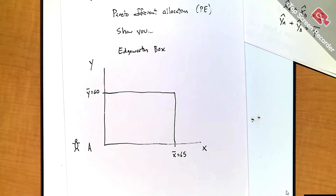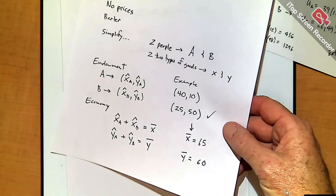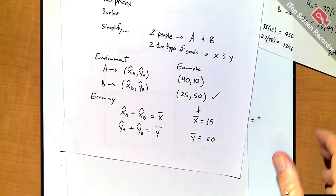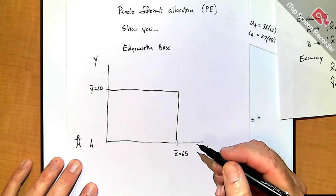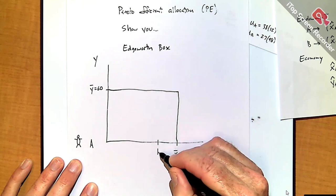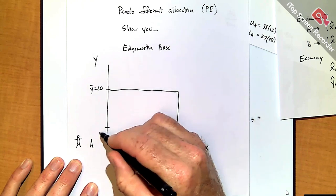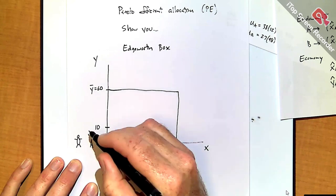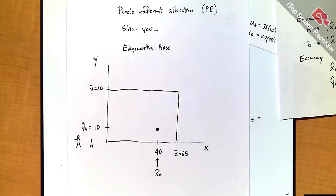I can plot A's endowment in the box. Going back to the example, A had 40 units of X and 10 units of Y — it's just a coordinate point, right about here: 40 and 10. So this marks x-sub-A-hat and y-sub-A-hat. So far, still not that impressive. There's A's endowment in the box. Now here's part of the genius: where do you put the second consumer?